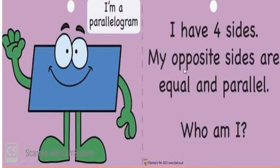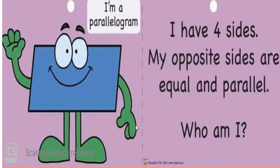My opposite sides are equal and parallel. So this is a rectangle. I have four sides. My opposite sides — look at the picture — these both sides are same, and these both are same. So we can say that my opposite sides are equal and parallel. Who am I? I am a rectangle. R-E-C-T-A-N-G-L-E.